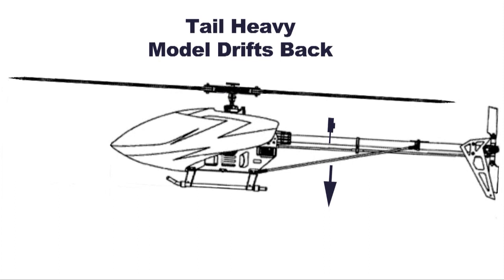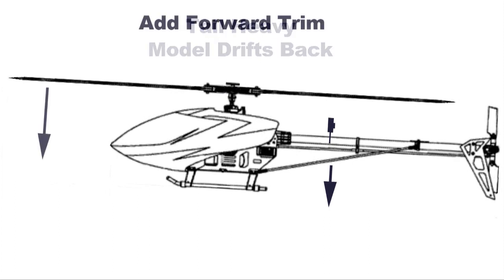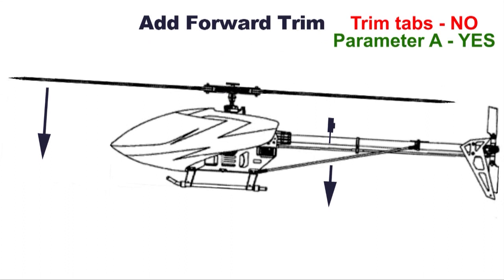But when I add the GoPro, tail's heavier so it drifts back. I'm going to use parameter A to offset that drift.